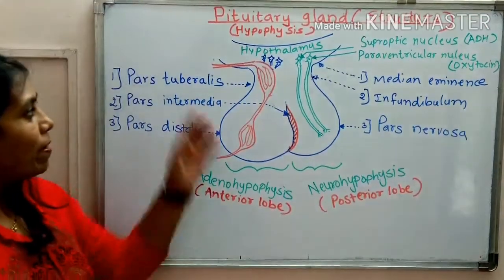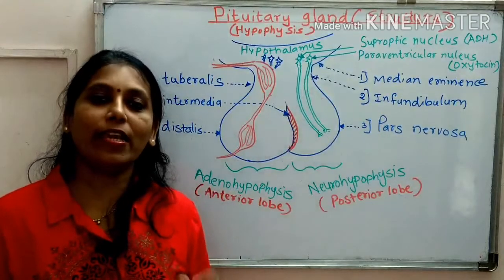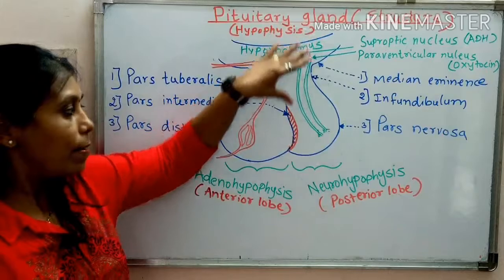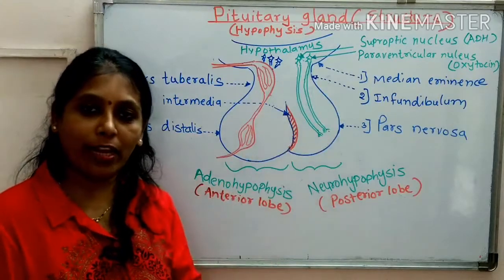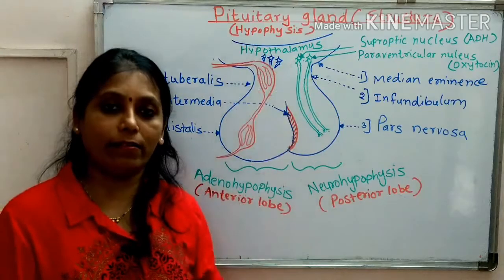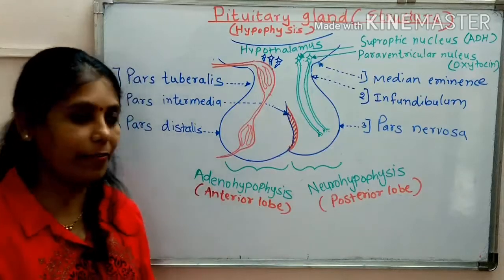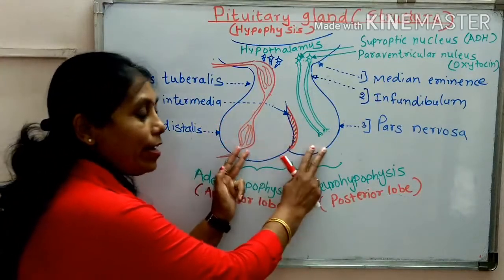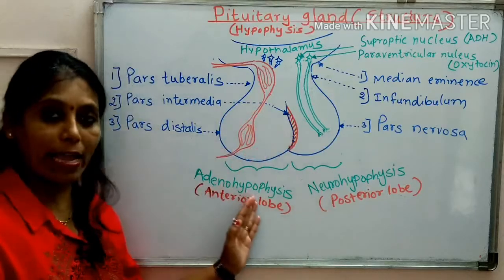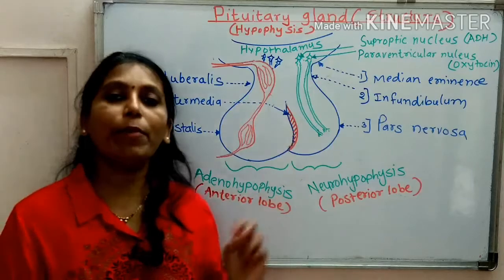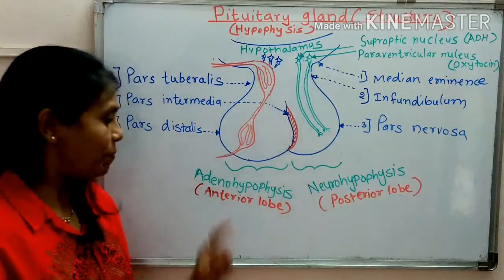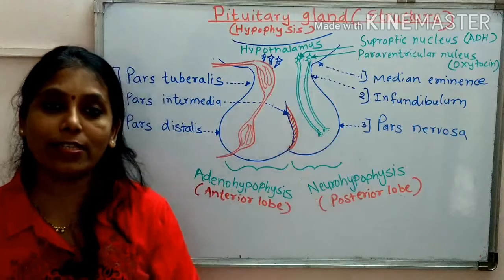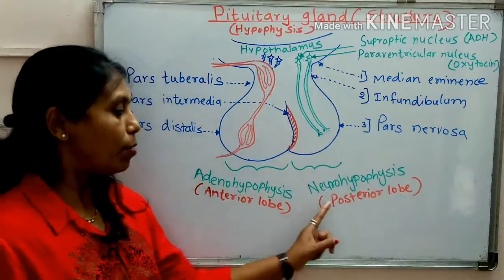We will now study the anatomy or internal structure of pituitary gland. This is pituitary gland and this part is called as hypothalamus. Pituitary gland is present at the base of hypothalamus. Broadly, pituitary gland is divided into two parts: this part is called as adenohypophysis, also called as anterior lobe, and this part is called as neurohypophysis, also called as posterior lobe.